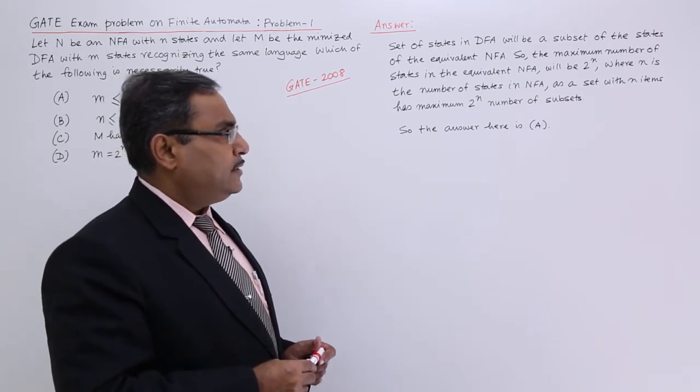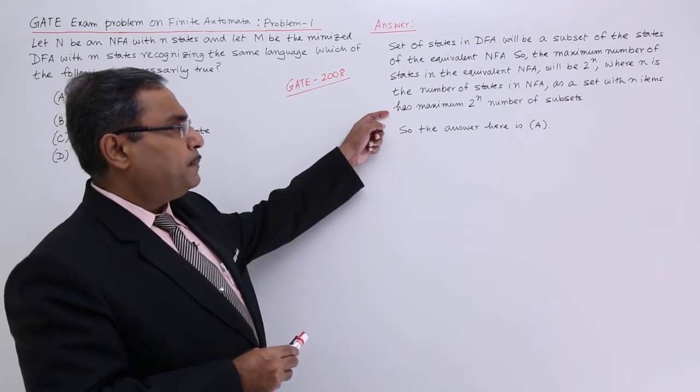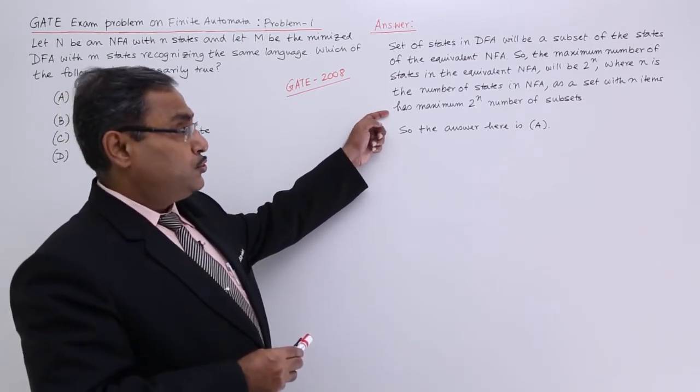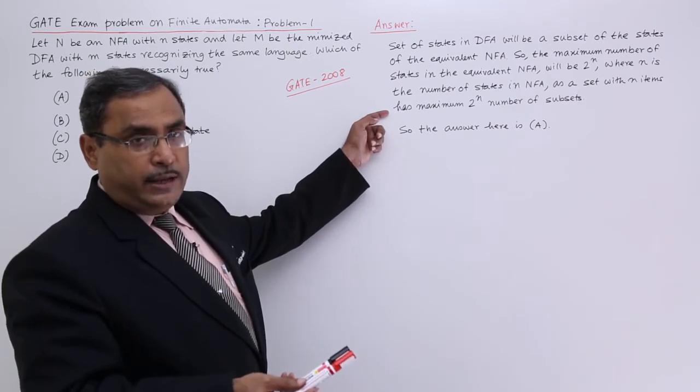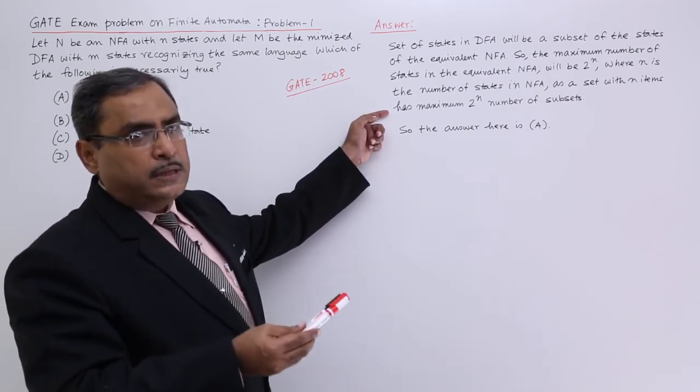As a set with n items has maximum 2 to the power of n number of subsets. In the power set will be having 2 to the power of n number of subsets.